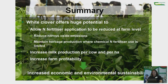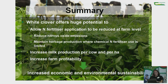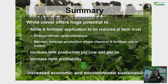To summarize: white clover incorporated into our systems offers huge potential to allow nitrogen fertilizer use to be reduced at farm level. This has positive impacts in terms of greenhouse gas emissions — reducing nitrous oxide — while we can maintain herbage production because we're taking advantage of clover's natural ability to fix atmospheric nitrogen. Clover also increases production per cow and per hectare in terms of milk solids and milk yield, and overall contributes to increasing farm profitability — offering significant opportunity to increase both the economic and environmental sustainability of farming systems.